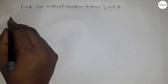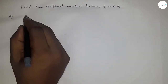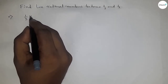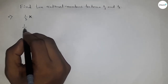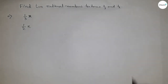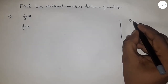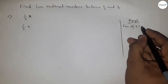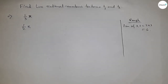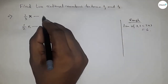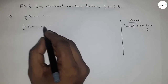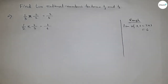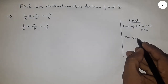First of all, write down the given rational numbers: 1/3 and 1/2. Now we have to find the LCM of 2 and 3. The LCM of 2 and 3 is equal to 6. So we have to make the denominator of both numbers equal to 6 — multiplying 1/3 by 2/2 to get 2/6, and 1/2 by 3/3 to get 3/6.